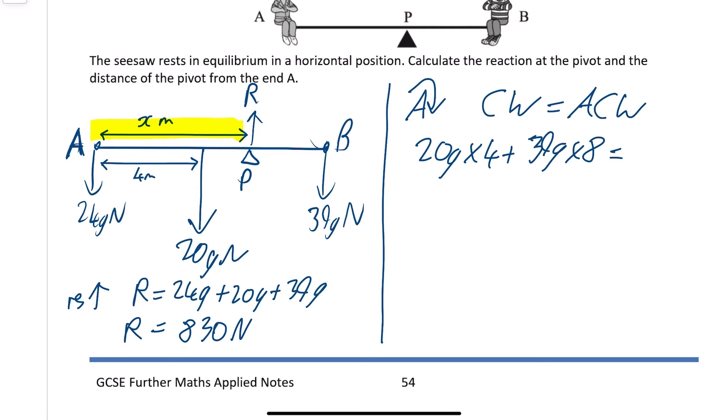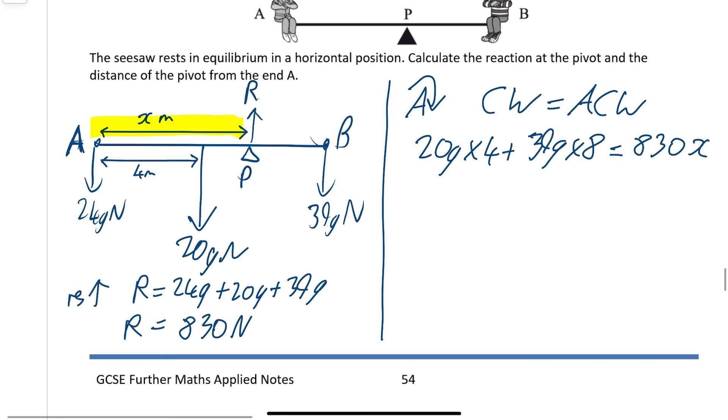And that is going to be equal to your R, which you've worked out to be 830, and that's multiplied by your X. So that is 20 times 10, that was your g, times 4, plus 39 times 10 times your 8. So I've worked both of those bits out on the left. I've got 3920, and that is equal to 830X.